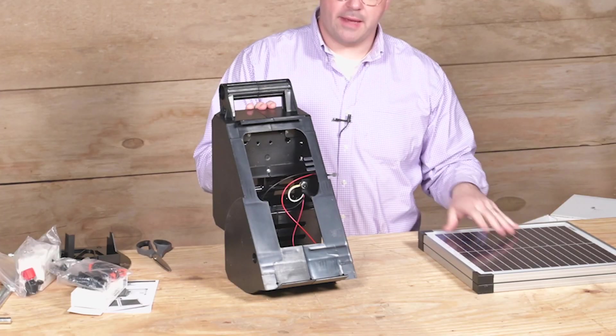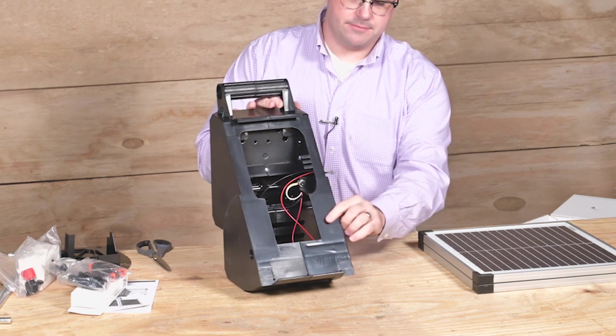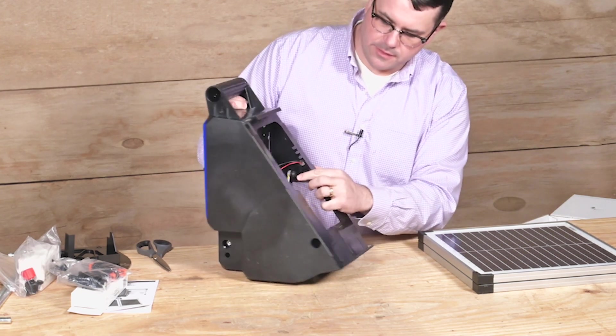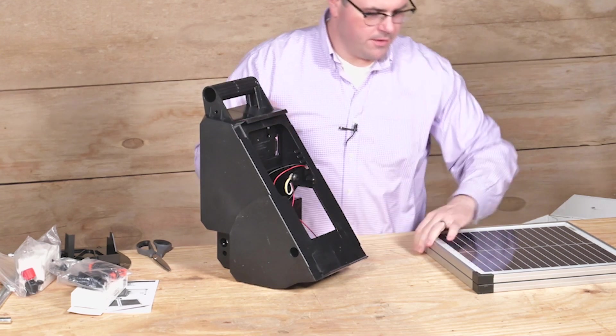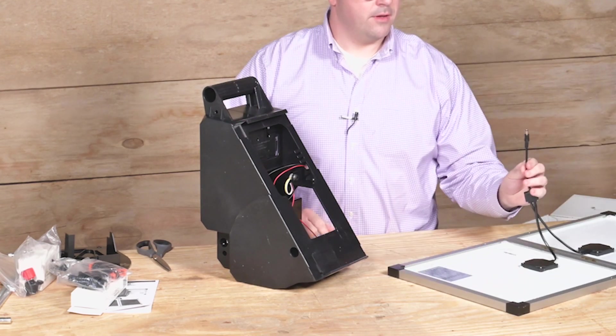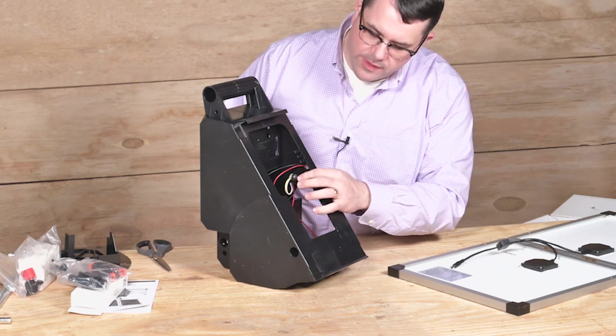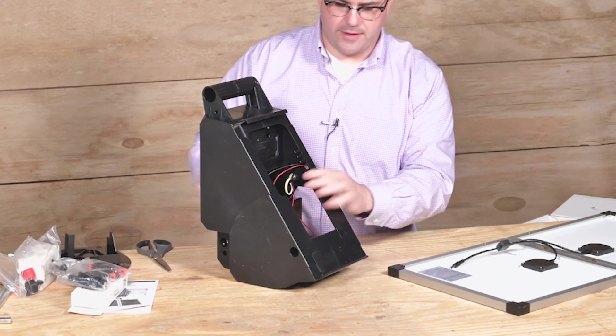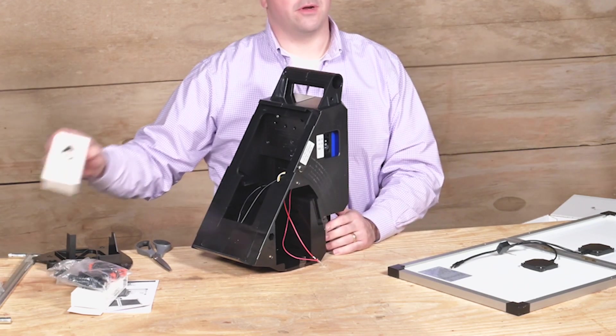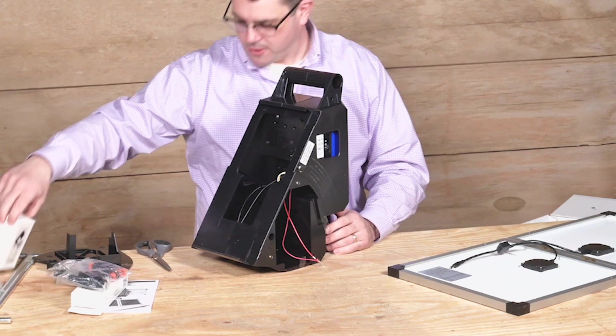We are ready to connect the solar panel to the Energizer body. On the inside of the unit there is a little plug. The cable from the solar panel will fit on that plug on the inside. There is an external plug that is for the 110 volt charger recharger.